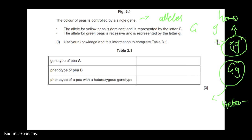So to summarize: an organism can be homozygous or heterozygous for a particular gene. The allele for yellow peas is dominant (uppercase G), and the allele for green peas is recessive (lowercase g).